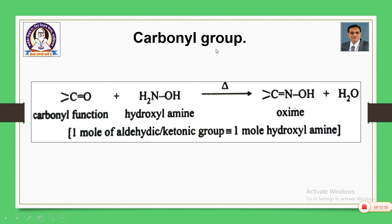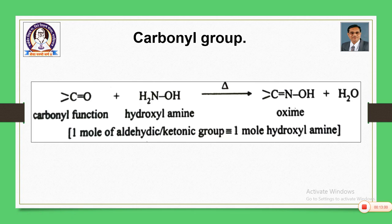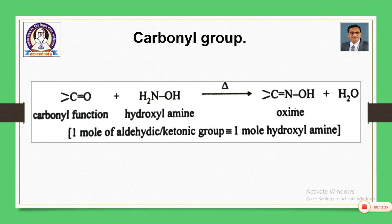Carbonyl groups are commonly aldehydic or ketonic. Initially, you have to investigate whether a carbonyl group is present using reagents like hydroxylamine or phenylhydrazine. The compound reacts with hydroxylamine forming an oxime — an aldehyde gives an aldoxime, a ketone gives a ketoxime. Quantitatively, one mole of aldehyde or ketone consumes one mole of hydroxylamine, so by stoichiometry you can confirm the presence and amount of carbonyl group.